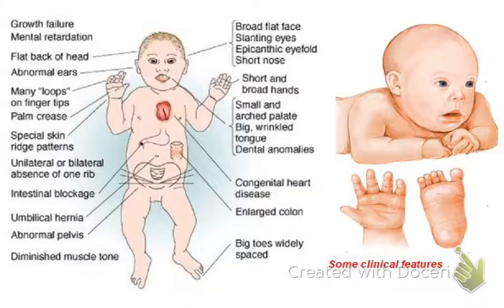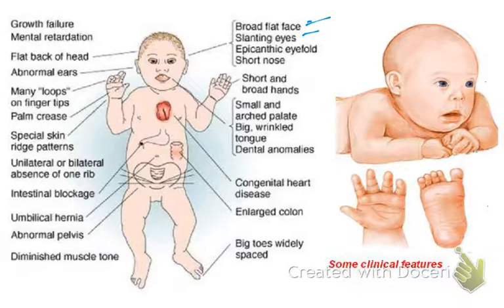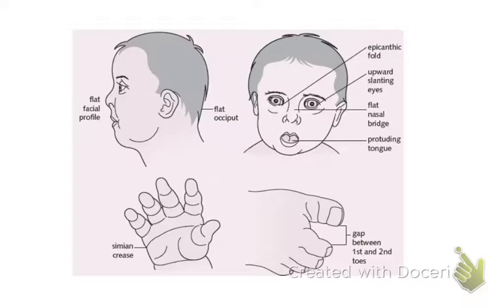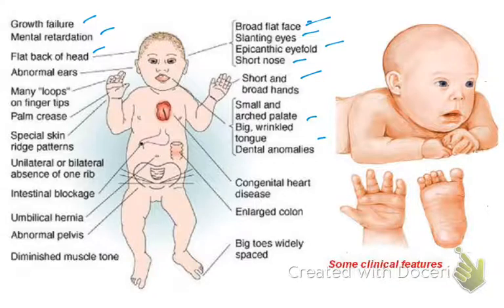Let's look at a few pictures here showing clinical features. In the head: broad flat face, slanting eyes, epicanthal eye folds, short nose. In the hand: short and broad hands. They also have a small arched palate, big protruding tongue, and various anomalies. They have growth failure and mental retardation, flat back of head, and normal-set ears. They have many loops of fingertips and the palmar simian crease — this is basically a skin ridge pattern.